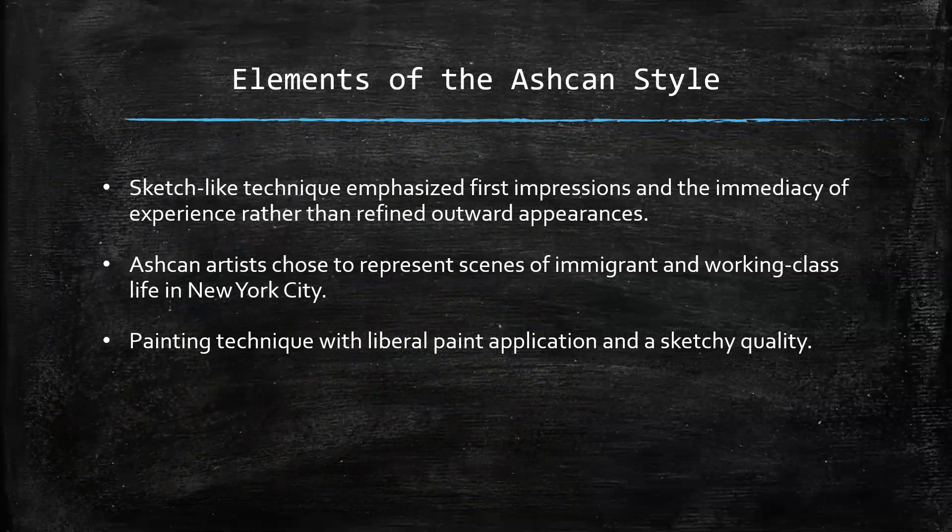The elements of the Ashcan style involved a sketch-like technique which emphasized first impressions and the immediacy of experience, rather than refined outward appearances like the academic realists. And the Ashcan artists, instead of upper-class subject matter, chose to focus on scenes of immigrant and working-class life in New York City.